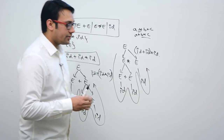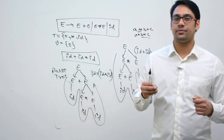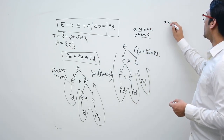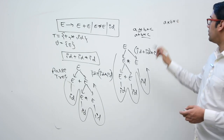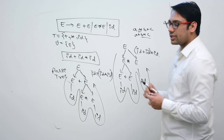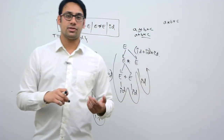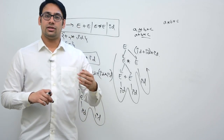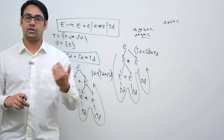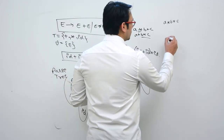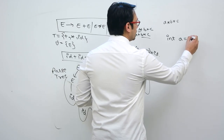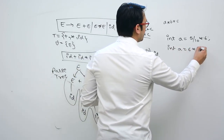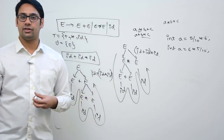The second thing making this grammar ambiguous is the rule of associativity. What is associativity? If we have A multiplied by B multiplied by C, both multiplications are having the same precedence. If two operations are having the same precedence, then which operator should we evaluate first? We look at associativity. Multiplication and division are having the same precedence and associativity is left to right. In the same way, plus and minus are having the same precedence and associativity is left to right.